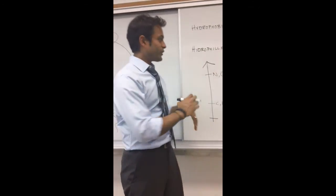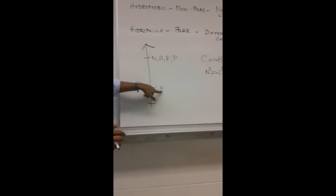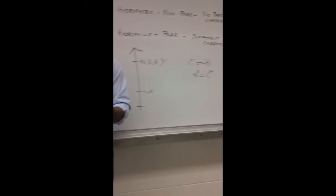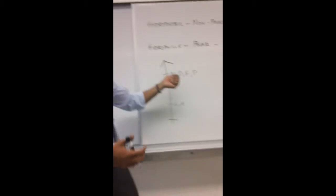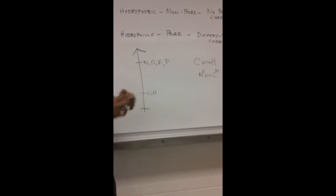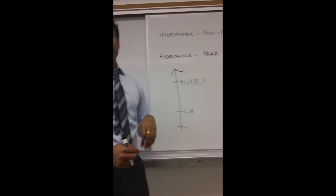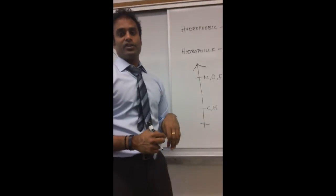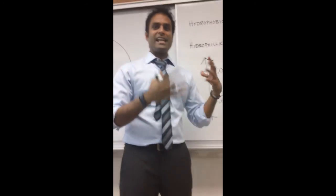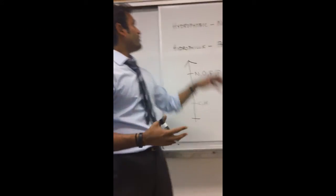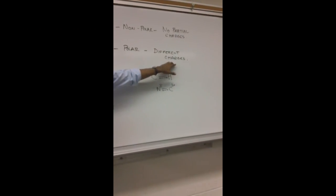This is the way it works for basically anything. If you have a carbon next to a hydrogen, no charge. If you have a nitrogen next to an oxygen, no charge. If you have an oxygen next to an oxygen, no charge. If you have a carbon next to a nitrogen, then you're going to have a partially negative charge. When you have lots of negatives and positives in a molecule, that's when it becomes hydrophilic, polar, because there are different charges.